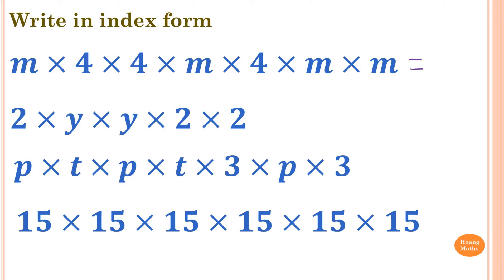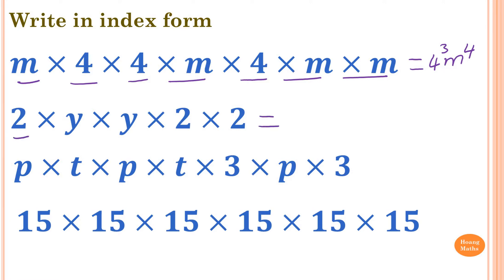4 times 4 times 4, which is 4 to the power of 3. M times M times M times M, so M to the power of 4. And 2 times 2 times 2, which is 2 to the power of 3. And Y times Y, so Y squared.